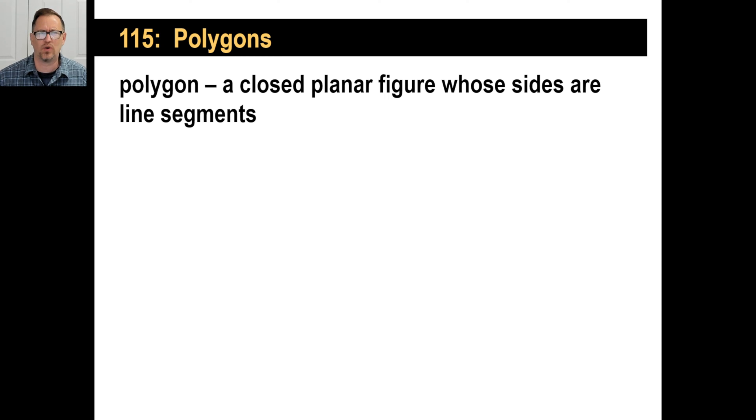Polygon is just two Greek words that mean many sides. That's the definition of polygon - it's a closed planar figure, in other words it's flat, whose sides are line segments. Closed means you're not going to have something open. And this will not be a polygon because that's a curved side. So basically that's what a polygon is.